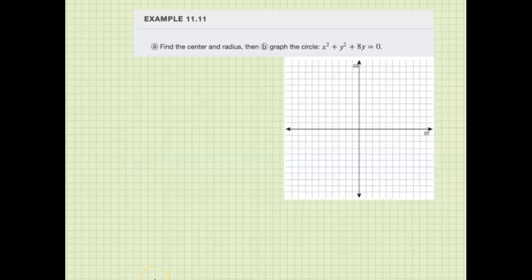Hello and welcome. We're going to look at this equation: x squared plus y squared plus 8y equals 0, which is not in standard form, so we've got to use completing the square to put it in the right format.